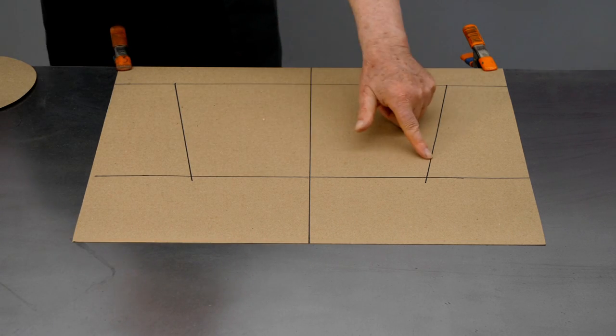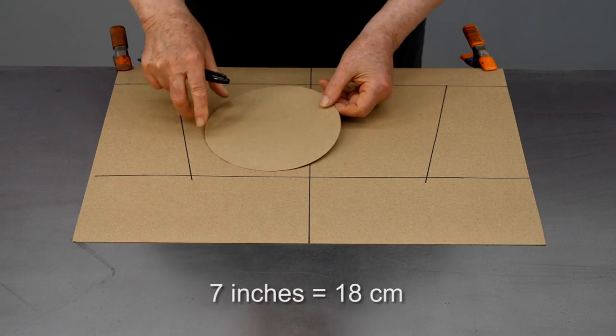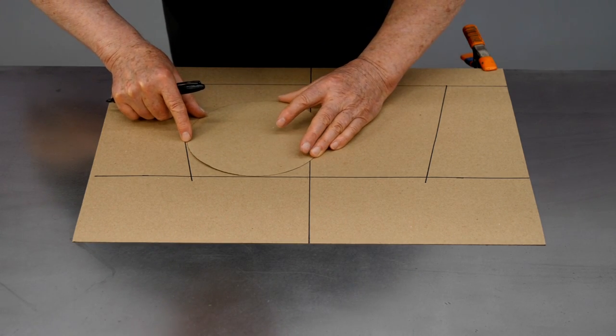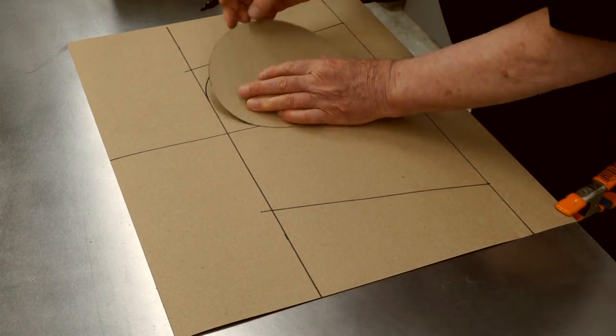I want a fairly generous radius in these corners, so I've cut a disc to be 7 inches in diameter. And I'll put this disc in place so it's tangent to the two lines, and I'll draw an arc.